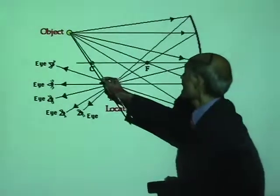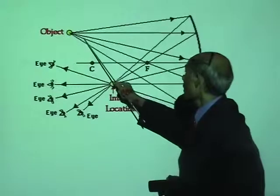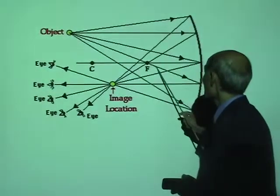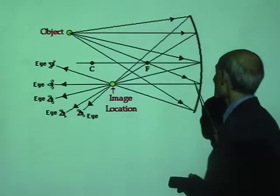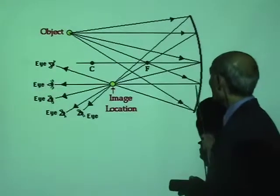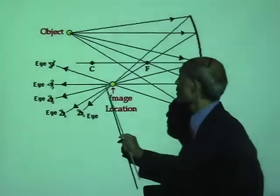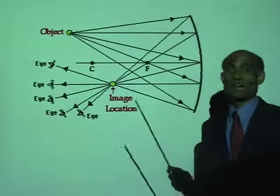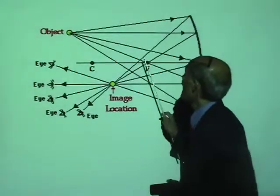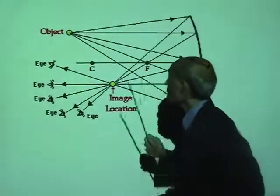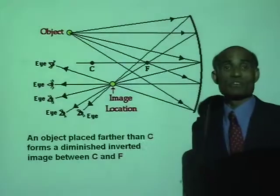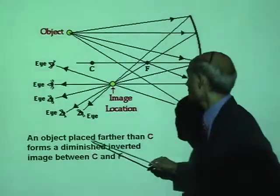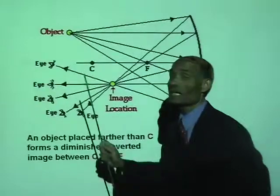If a light ray starting from the object goes through the principal focus, after reflection from the mirror it will go parallel to the principal axis. Once you know that, you can construct images using that principle. An object placed farther than C — this is the center of curvature.